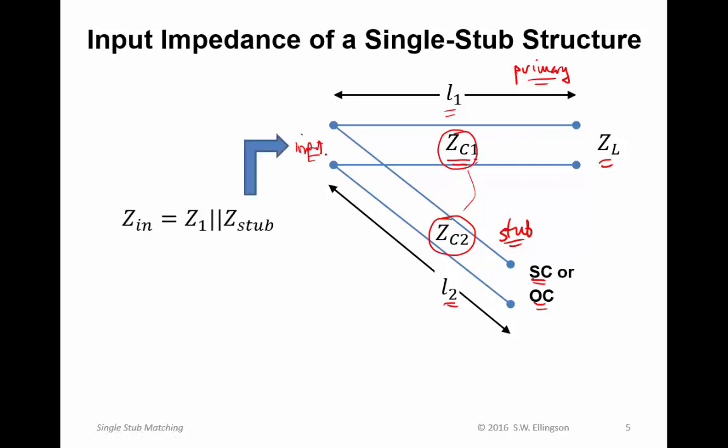The input impedance is simply the parallel combination of the impedance of the primary line and the impedance of the stub. So Z1, which is the input impedance of the primary line, in parallel with Z_stub. The input admittance is simply Y1, that's the reciprocal of Z1, plus Y_stub. The reason we like admittances here should be obvious. This is a simple addition of admittances, whereas to compute the input impedance, we have to compute the parallel combination. That's a much more complicated expression, especially since all these parameters are complex valued.